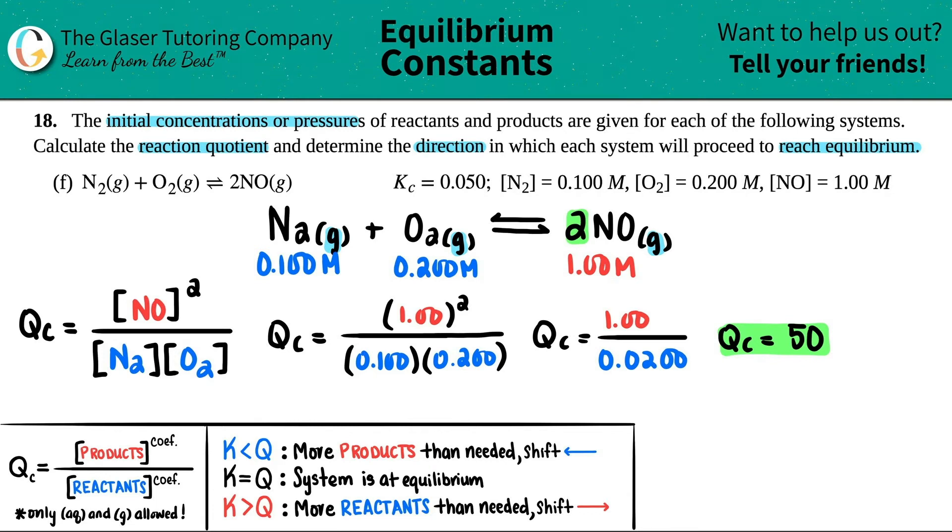Now we take this information and compare it with the K to see which way we're going. There is a little trick, guys. If you want to use the trick, put the QC on the right-hand side and the KC value on the left. I got 50, and they told me that I had 0.050 for the KC. Now remember what we said about the K being less than 1. That means that at equilibrium, we want to favor the reactant side. But in this case, we have a way bigger number. Big numbers greater than 1 means that we have way more products.